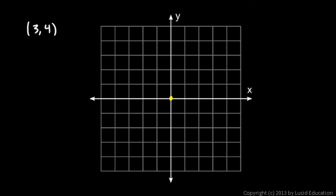Count this point as 0. You could count 0, 1, 2, 3 to the right, and then count 0, 1, 2, 3, 4 up. But a better way to think of it, instead of counting points, is think of these numbers 3 and 4 as distances.